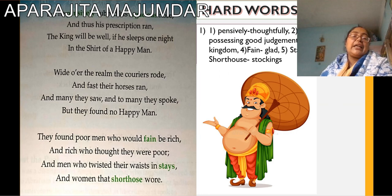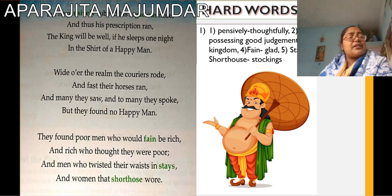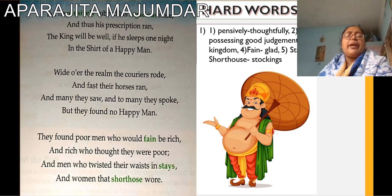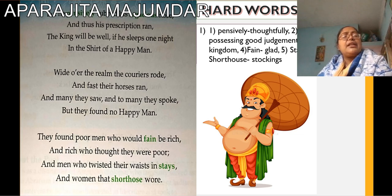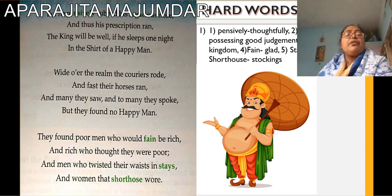When I recite, you all are going to recite with me. But he pensively rubbed his sagacious nose, and thus his prescription ran: the king will be well if he sleeps one night in the shirt of a happy man. Wide over the realm the courtiers rode, as fast as their horses ran. And many they saw, and to many they spoke, but they found no happy man. They found poor men who would fain be rich, and rich who thought they were poor, and men who twisted their waists and stays, and women that wore short hose.